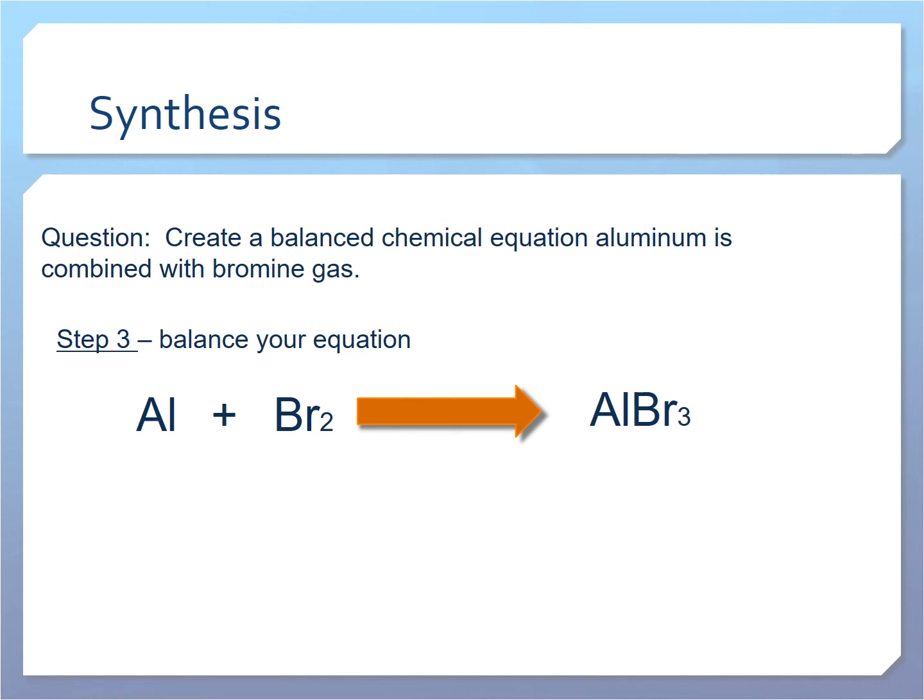Now we're going to balance, and the tricky part about this one is that we have three bromines on the right and two bromines on the left. Two times three is six, so we want to get six bromines on both sides.